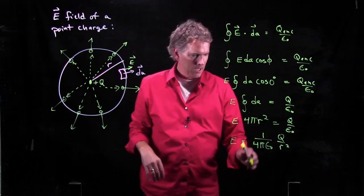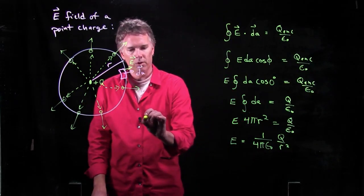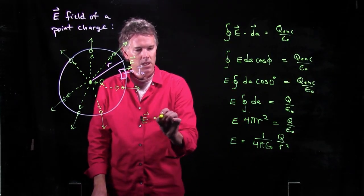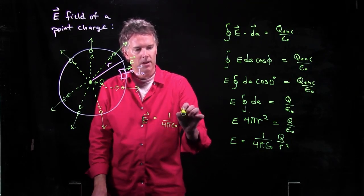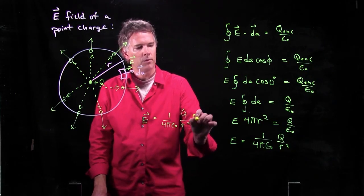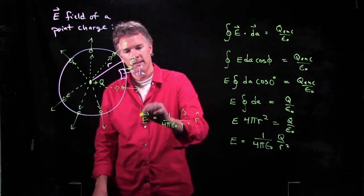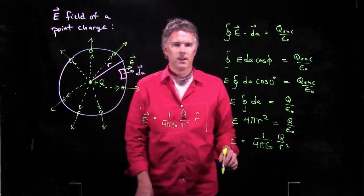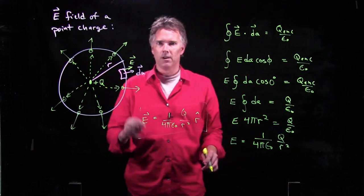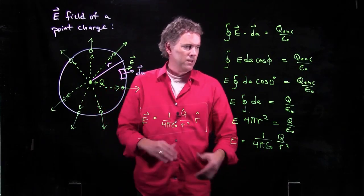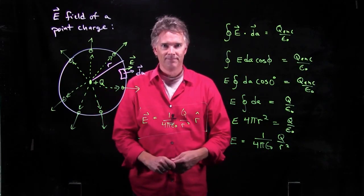we had a positive charge, and so we can get to our final result. You say E is 1 over 4 pi epsilon not q over r squared r hat. Okay? Electric field of a point charge calculated using Gauss's law. Alright, hopefully that's clear. Cheers!